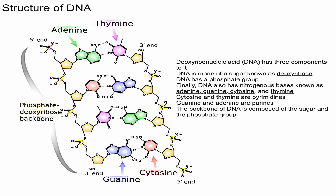In future videos we'll get more in depth on the structure of DNA and what nucleotides are. But for now, imagine DNA as a ladder — the backbone of that ladder is the phosphate and the deoxyribose, the sugar-phosphate backbone. The middle of the ladder is made up of the bases.